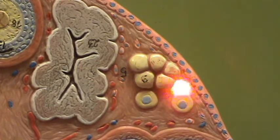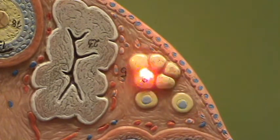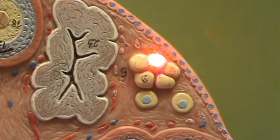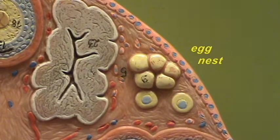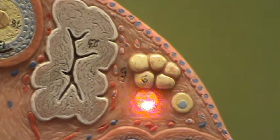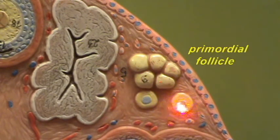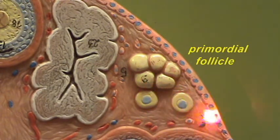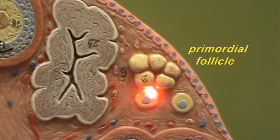These primary oocytes are in a grouping right over here, and this grouping typically beneath the germinal epithelium is referred to as an egg nest. Here we see these primary oocytes as part of an egg nest, and these primary oocytes are surrounded by follicular cells. The follicular cells together with the primary oocyte is called a primordial follicle. Right over here we see seven primordial follicles in an egg nest.